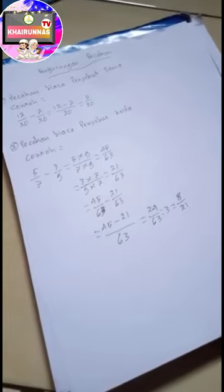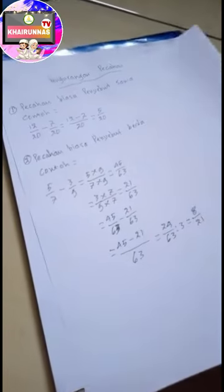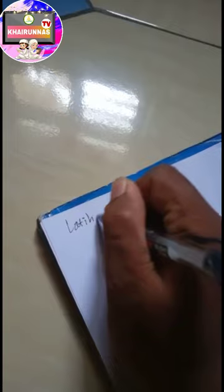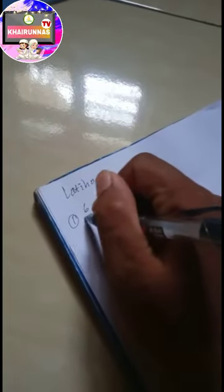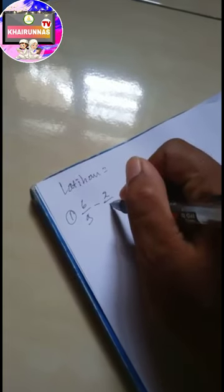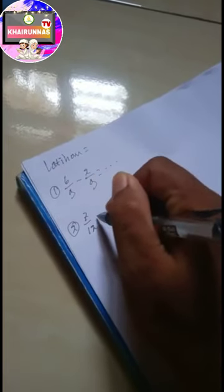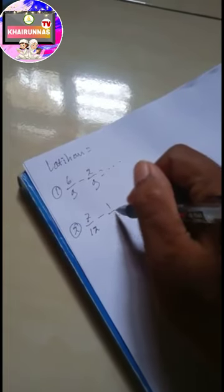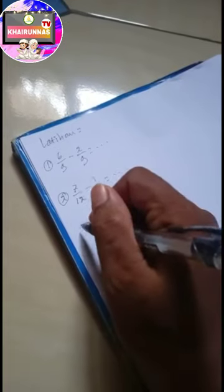Mohon diperhatikan dan mohon disimak. Sekarang latihan. Latihan: 6 per 9 dikurangi 2 per 9. Yang kedua: 7 per 12 dikurangi 1 per 12. Ini yang pecahan biasa berpenyebut sama ya. Sekarang yang penyebutnya beda.